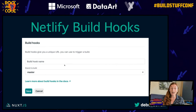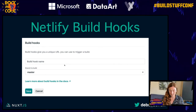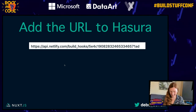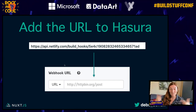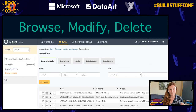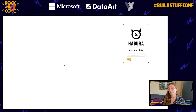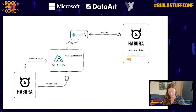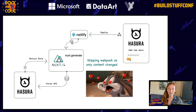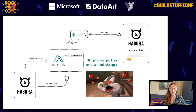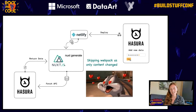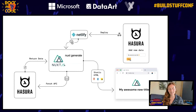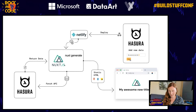Every time you modify data and press Save, Hasura fires the event, deploys to Netlify, and runs Nuxt Generate. It fetches the API from Hasura, returns the data, and then — because you only changed data, not the application — it skips Webpack entirely. It doesn't need to create new bundles, just changes the data, creating those payload files. It's super fast. Then you get your static HTML with your new data on the page.